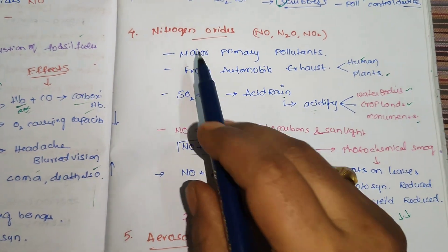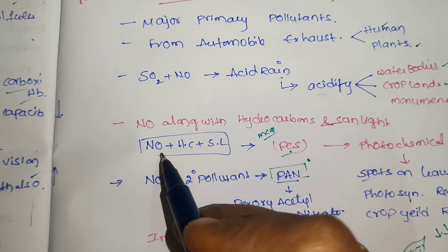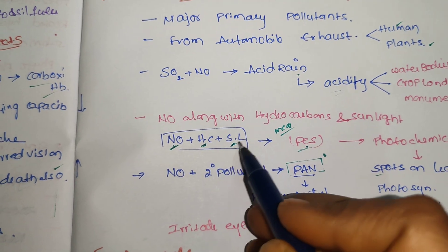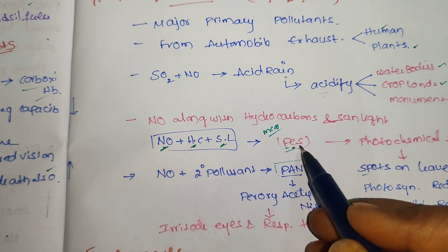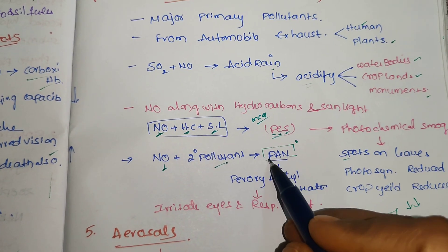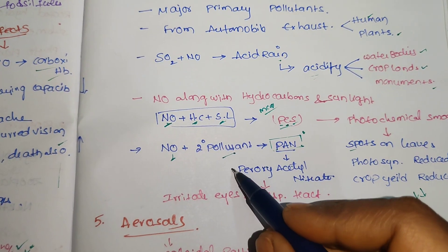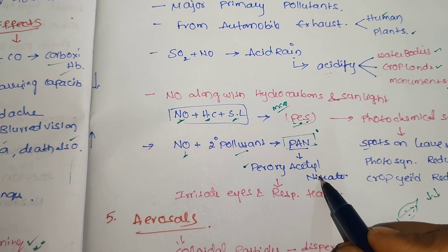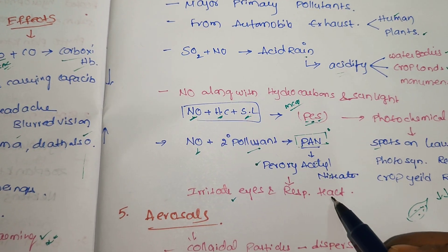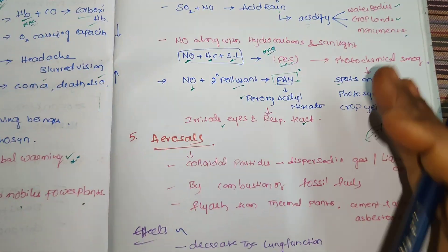Remember: nitrogen oxides + hydrocarbons + sunlight → photochemical smog. Nitrogen oxides + secondary pollutants → PAN (peroxyacetyl nitrate). PAN causes irritation of eyes and respiratory tract problems. The impact of photochemical smog on plants: it forms spots on leaves, reducing the rate of photosynthesis and automatically reducing crop yield.